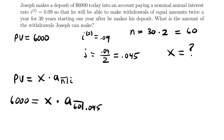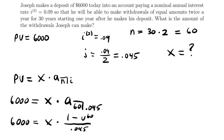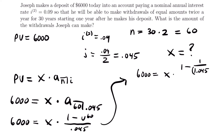Expanding the notation: 6,000 = X times [1 minus V^60] divided by 0.045. Rewriting with the present value factor: 6,000 = X times [1 minus 1/(1.045)^60] divided by 0.045.